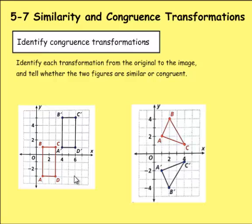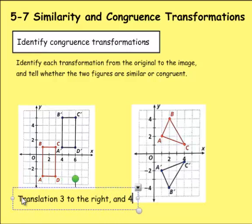D was moved 3 to the right and 4 up. C, 3 to the right, 4 up. And B, 3 to the right and 4 up. So it looks very much like this would be a translation 3 to the right and 4 up.